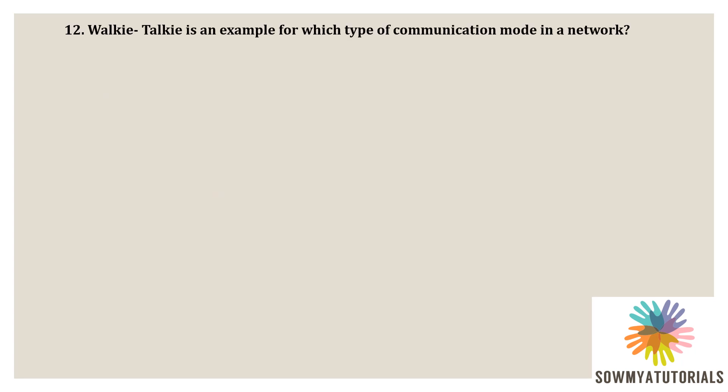Next question: walkie-talkie is an example for which type of communication mode in a network? Options are option A - simplex, option B - complex, option C - half duplex, option D - full duplex. The correct option is half duplex, because in half duplex mode the sender can send the data and also receive the data but only one at a time. It is two-way directional but only at one time, so walkie-talkie is an example of half duplex mode communication in a network.